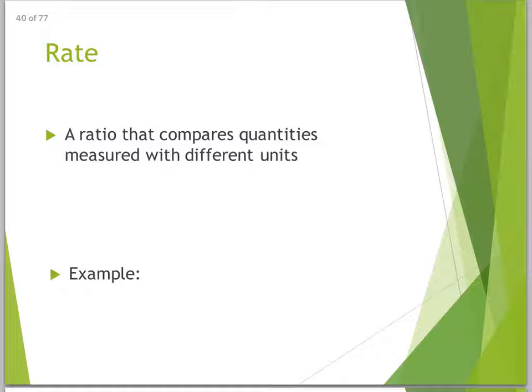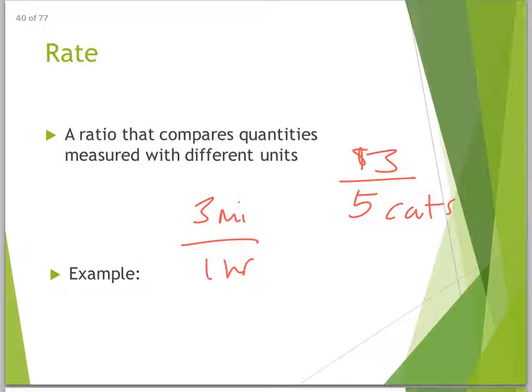Rate: a ratio that compares quantities measured with different units. These are ones you hear about quite often, like miles per hour, so three miles per one hour, or three dollars for five cats. Again, it's called a rate.